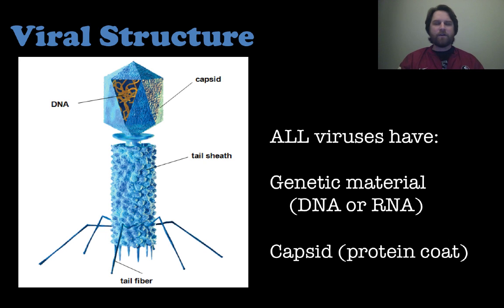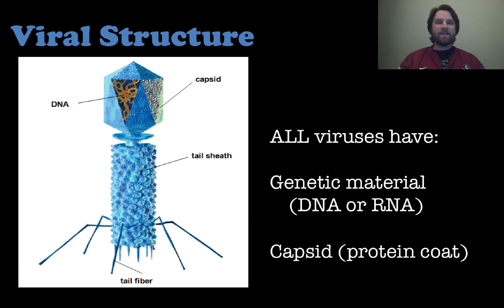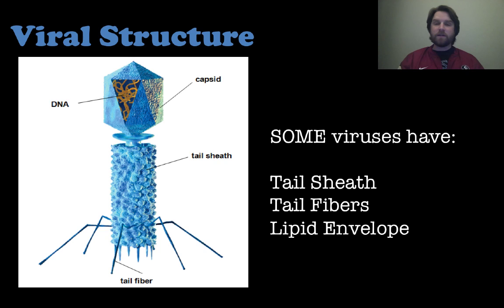The one we have here is called a bacteriophage, but what I want to point out is that all viruses have a couple of things in common. All viruses have genetic material, either in the form of DNA or RNA — it can be double-stranded or single-stranded. And all viruses also have a capsid or protein coat that encases that genetic material. Now, some viruses — not all viruses — are going to have a tail sheath, tail fibers, or even something called a lipid envelope, which is another layer of protection made of lipids.